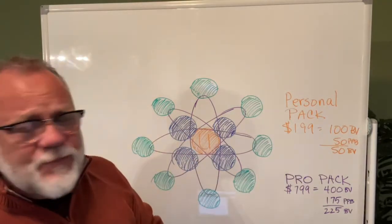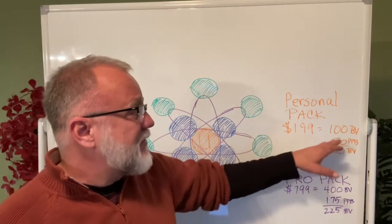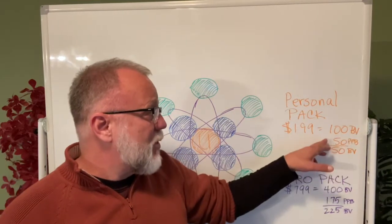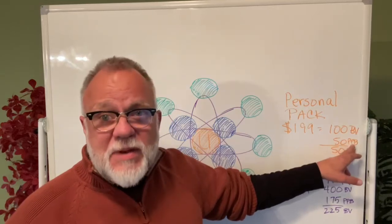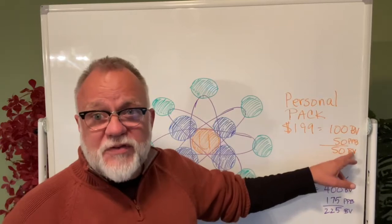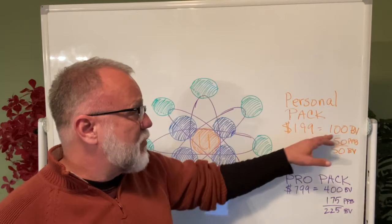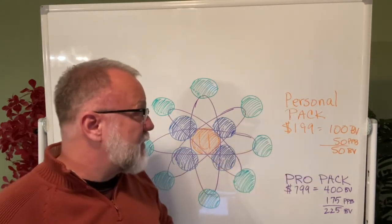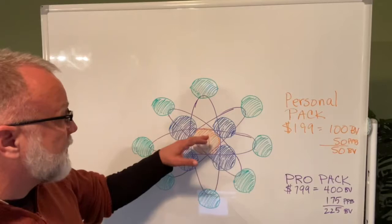Now, let's break this down. The personal pack that starts at $199 has a bonus volume of $100. That bonus volume of $100 is broken down between two different categories. The PPB, which is promotional package bonus, and the BV, which is bonus volume. Total bonus volume of $100. And it's a reduced bonus volume because these are discounted packages so that you get the best price on your product as well as you're entering the company. So let's break this down first and let's look at this image.